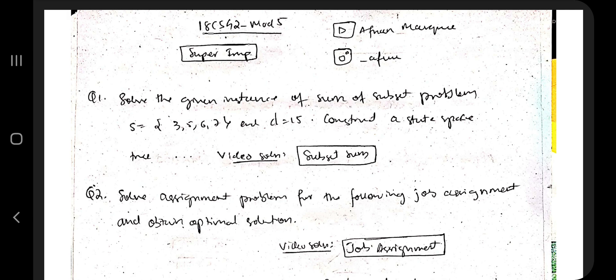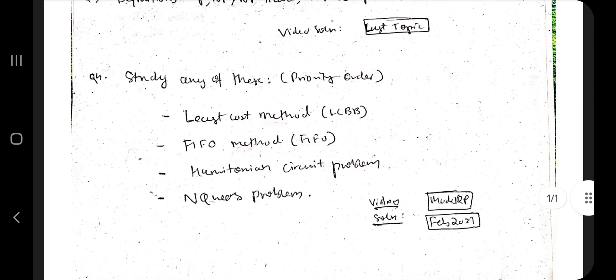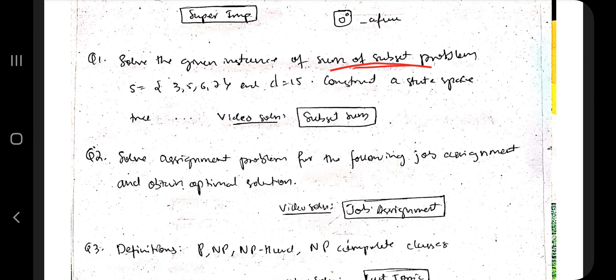From these, I have picked up four topics, and in the fourth topic there are a few more sub-topics in priority order. You have to first study the subset sum problem. This is very important as it's been repeated in all the papers, so you must study this one.